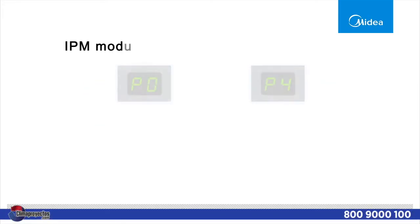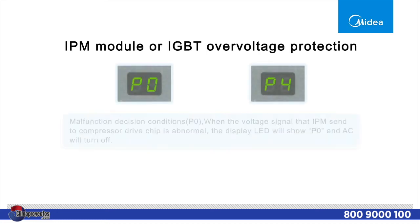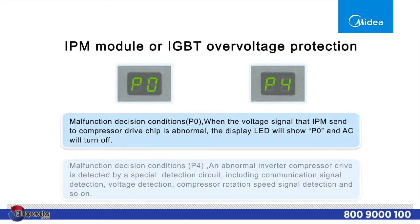When the indoor unit displays P0 or P4, that indicates an IPM module fault or IGBT over voltage protection.